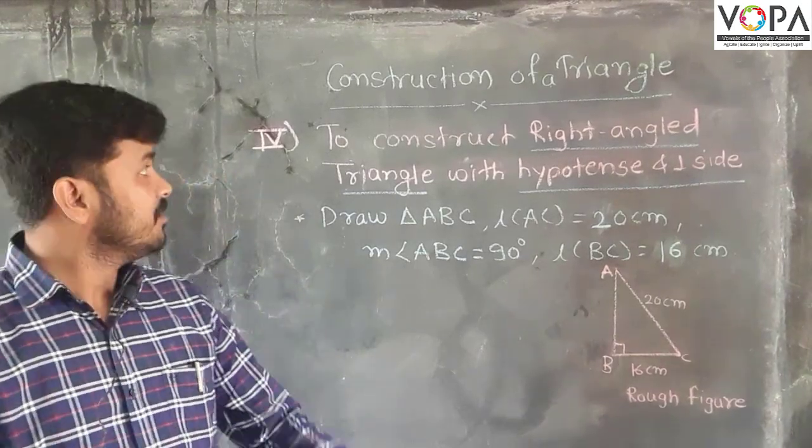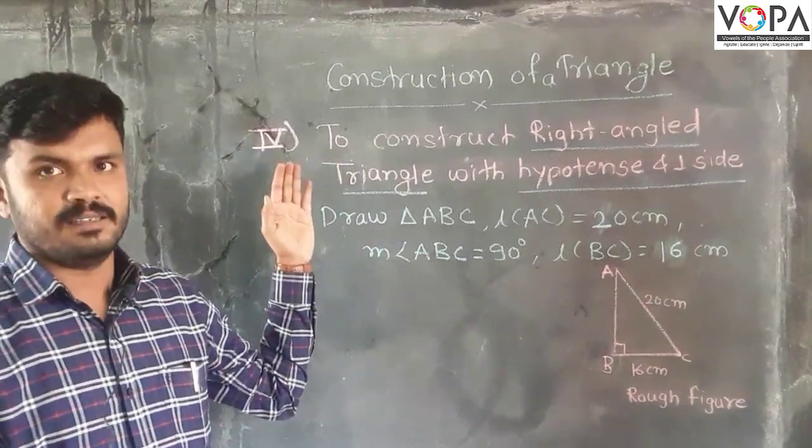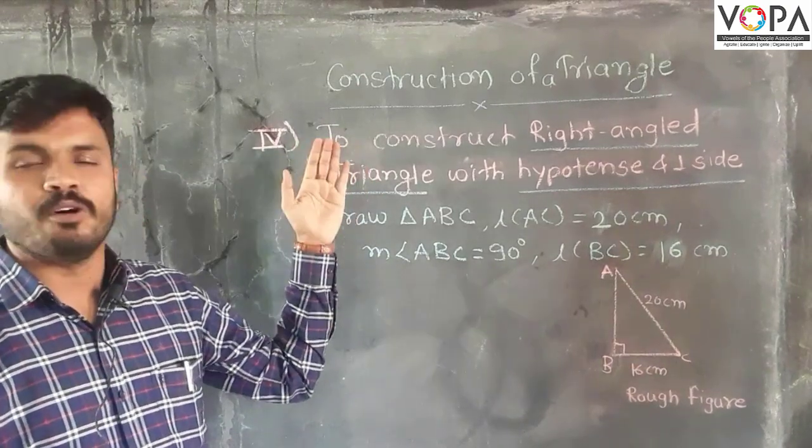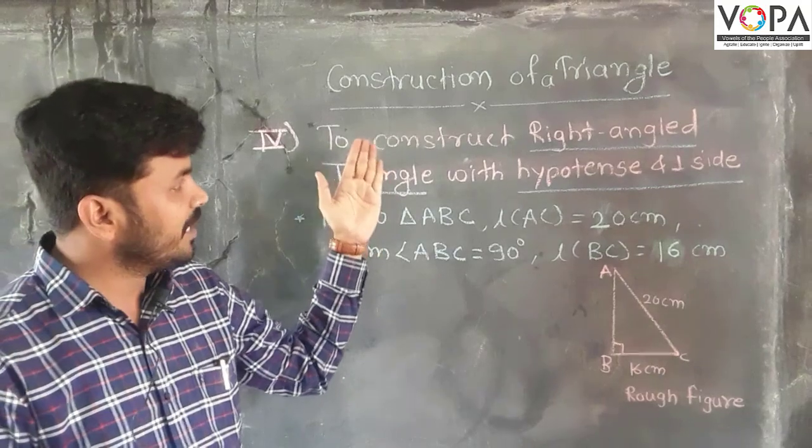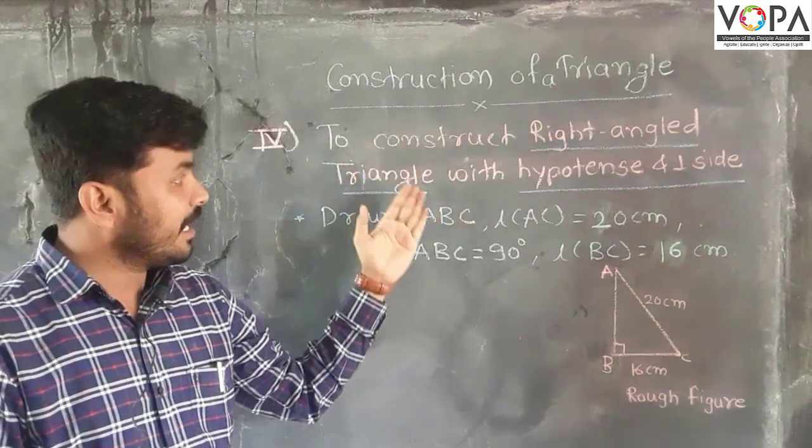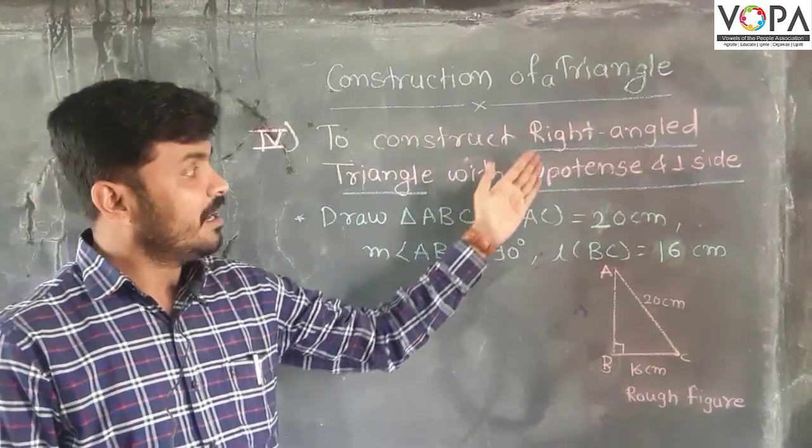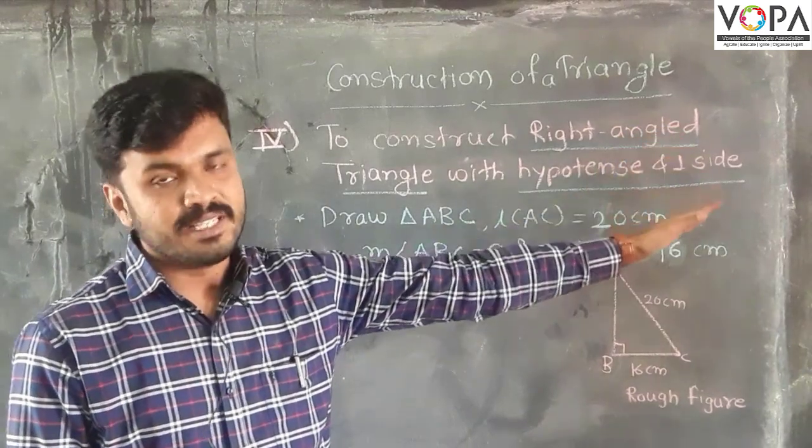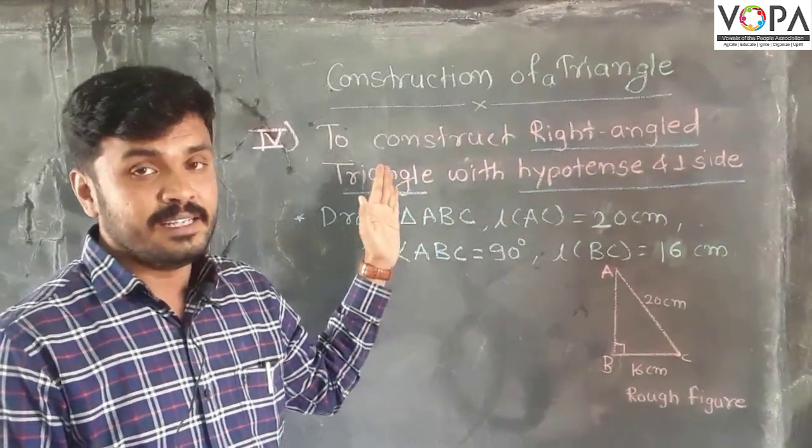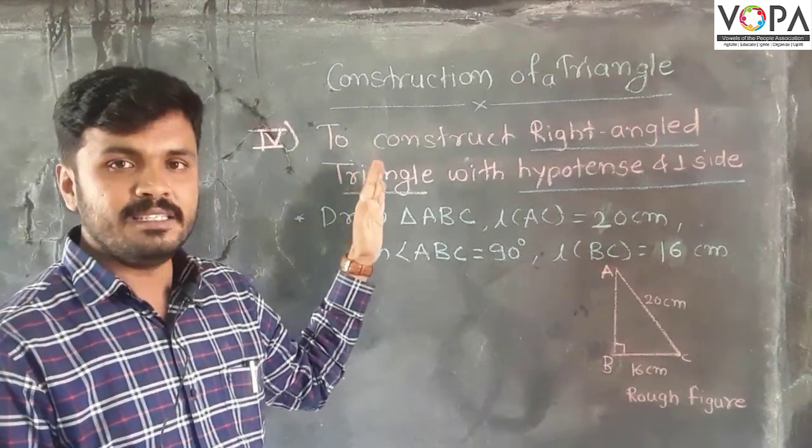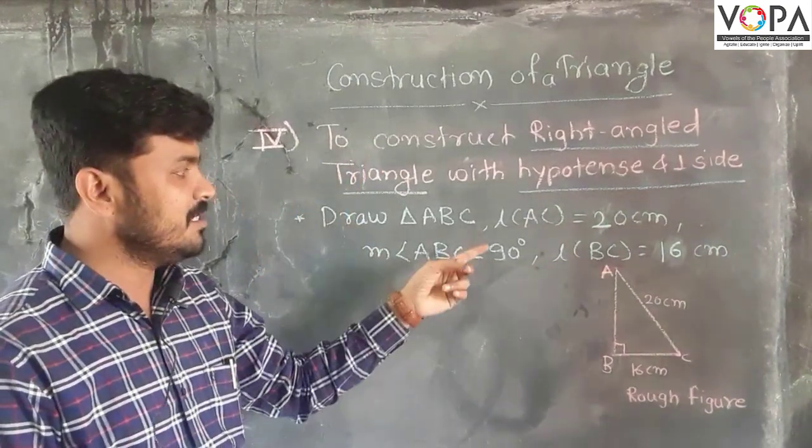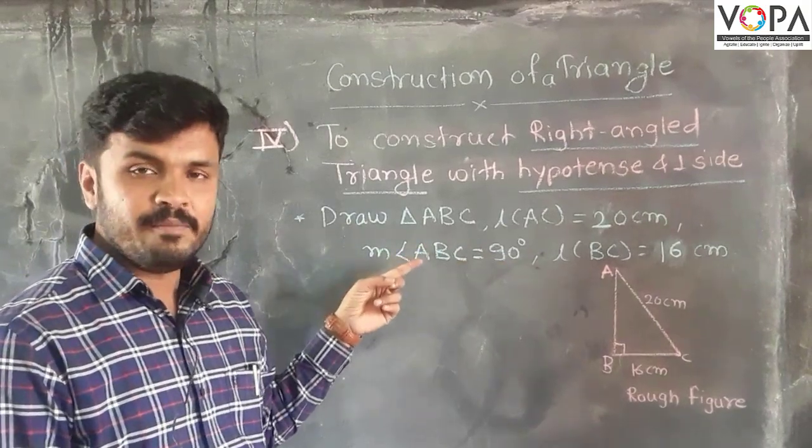Hi students, now this is the last type of the construction of triangle: the right angle triangle. We can draw the right angle triangle with the help of the hypotenuse and one side. This is the right angle triangle, that means one angle of the given triangle is 90 degrees. Where is 90 degrees, there is right angle triangle.